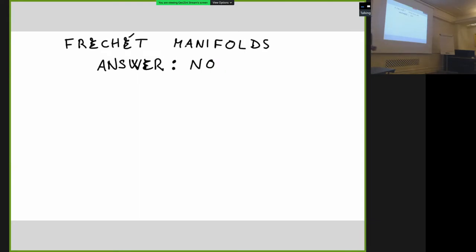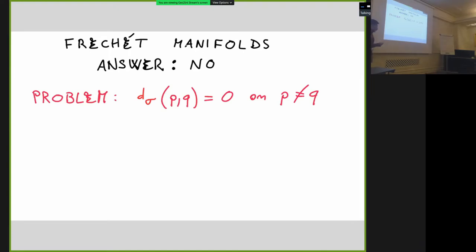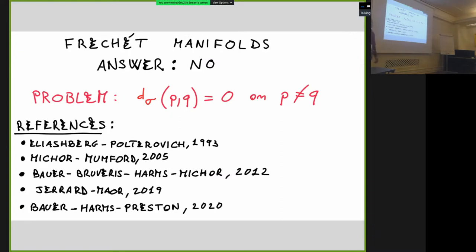In the Fréchet case — the most general one — the answer is no. In general you don't have a metric structure: the geodesic distance is not a distance. The problem is that the geodesic distance can be zero between two distinct points, so it does not separate points. I include some references where you can find examples of this phenomenon for Riemannian metrics on Fréchet manifolds.